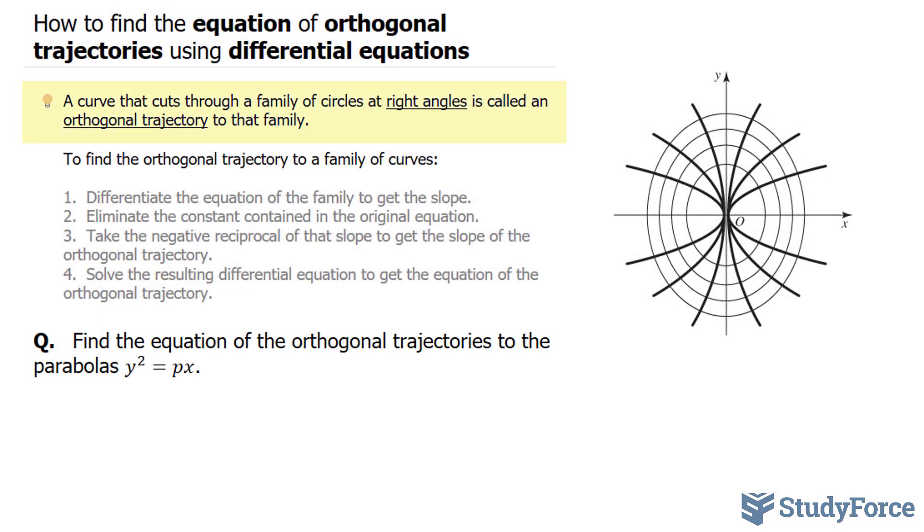Now before we start this question, let's go through some theory. Remember that a curve that cuts through a family of circles at right angles is called an orthogonal trajectory to that family. Take, for example, the illustration that you see on your right. We have these ellipses that are one within another, and we have these parabolas that are in terms of x and are cutting through these ellipses at right angles.